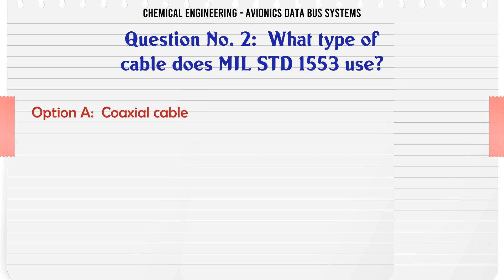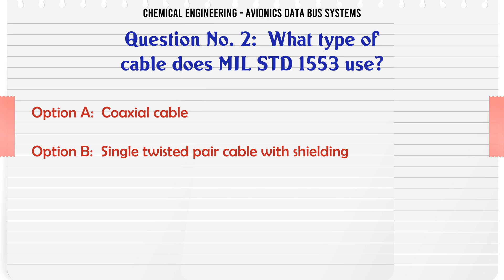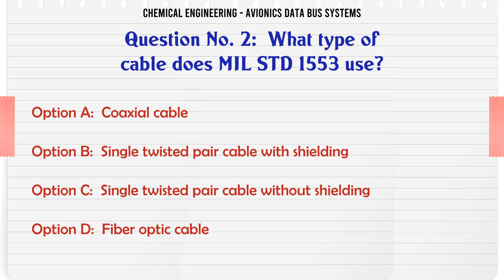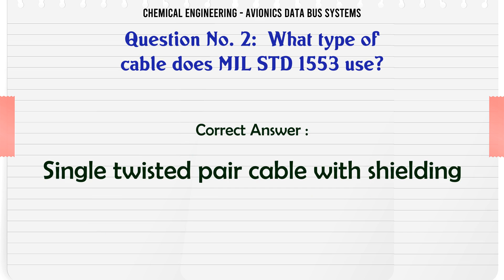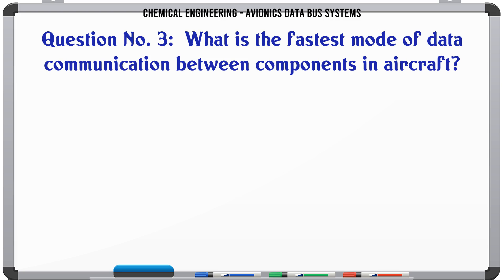What type of cable does MIL-STD-1553 use? A. Coaxial cable, B. Single twisted pair cable with shielding, C. Single twisted pair cable without shielding, D. Fiber optic cable. The correct answer is Single twisted pair cable with shielding.